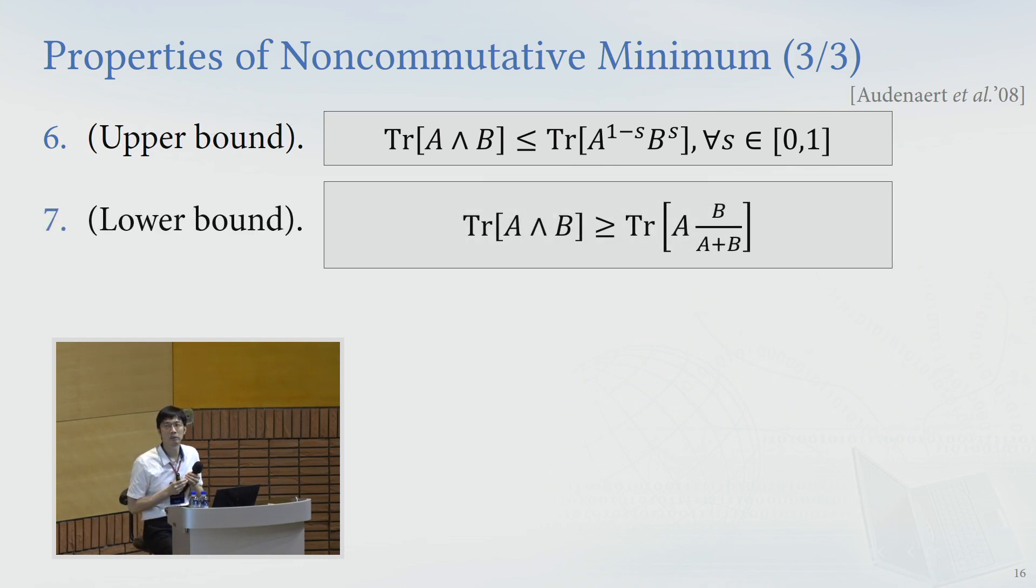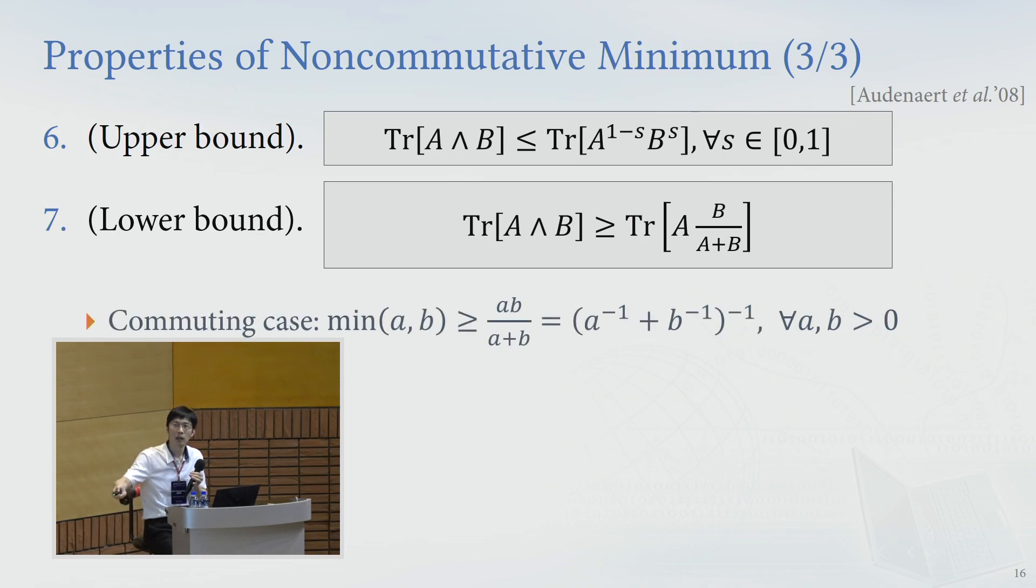Okay, and in this talk, I will show a lower bound to the non-commutative minimum by this guy, like A times the non-commutative quotient of B over A plus B. What does this mean? So in the commuting case, if A and B commute, then we can view the left-hand side like minimum between the positive scalars, small a and small b.